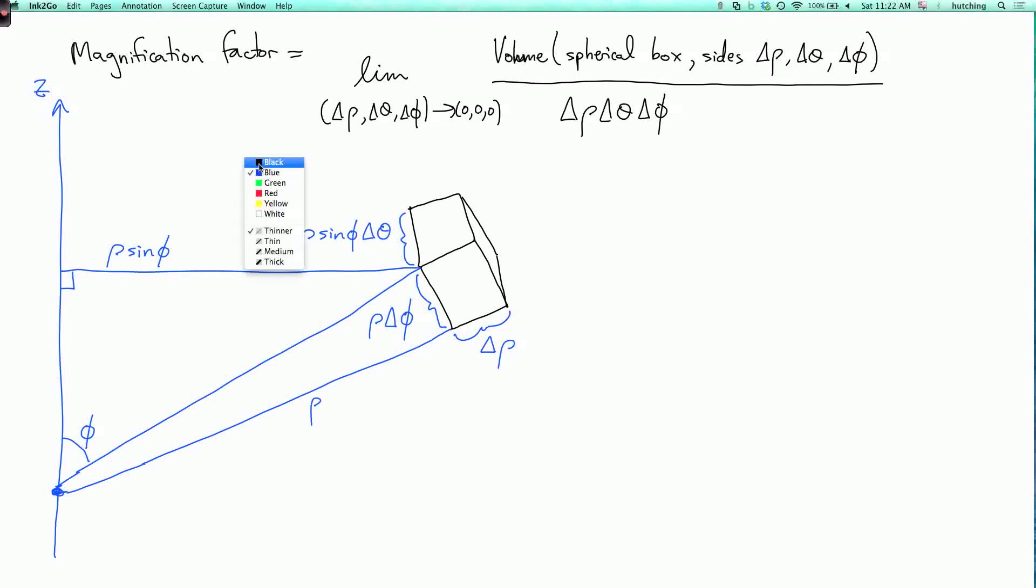So we conclude that the volume of the box is approximately the product of these three numbers. It's only approximate because this is not a perfect rectangular box. The sides are a little bit curved. But when delta rho, delta theta, and delta phi are small, it's a good approximation.